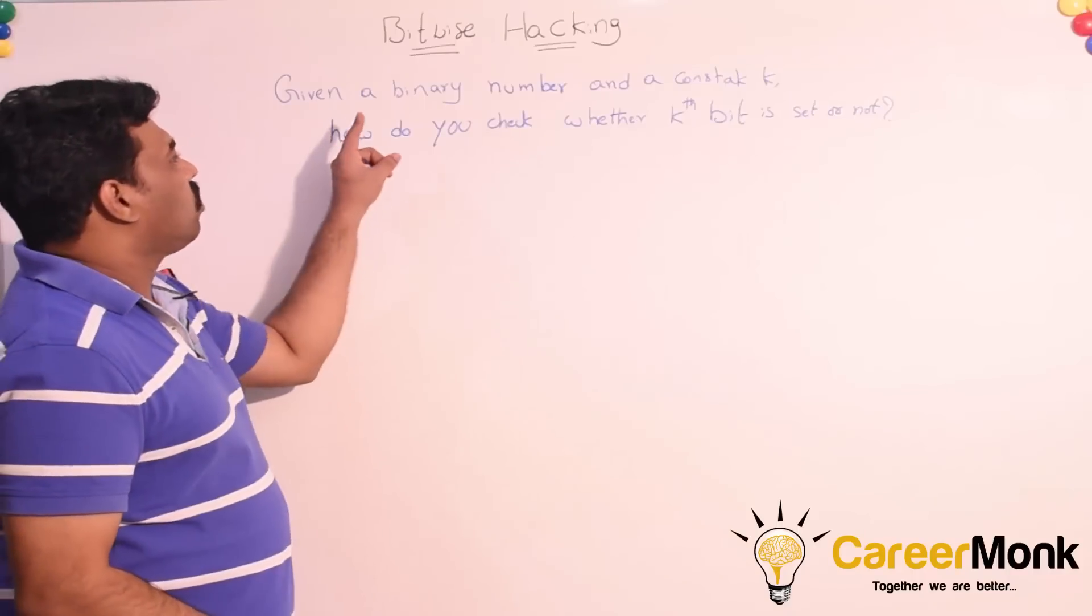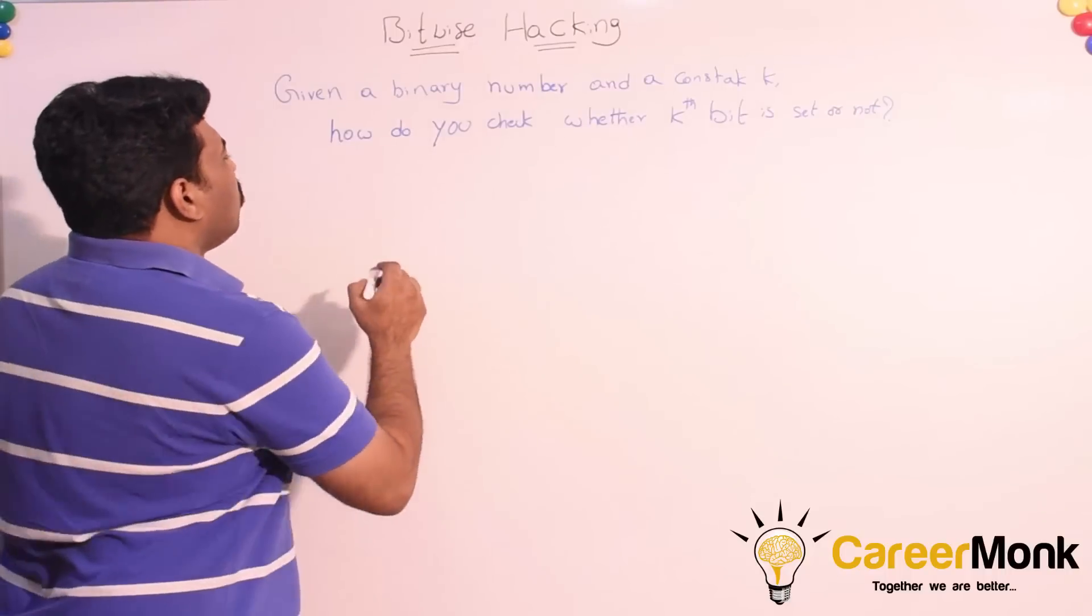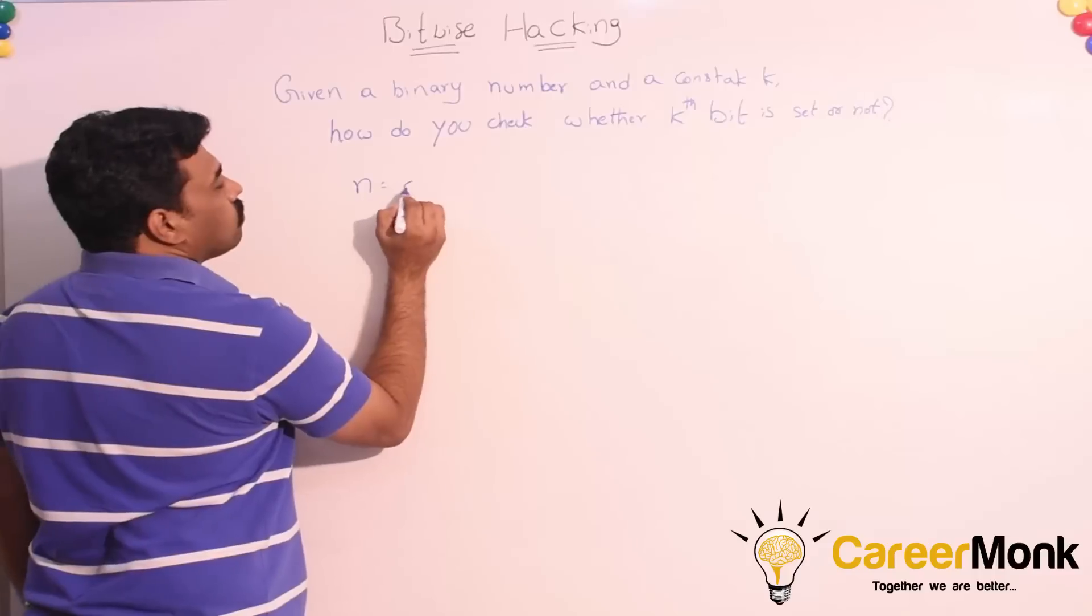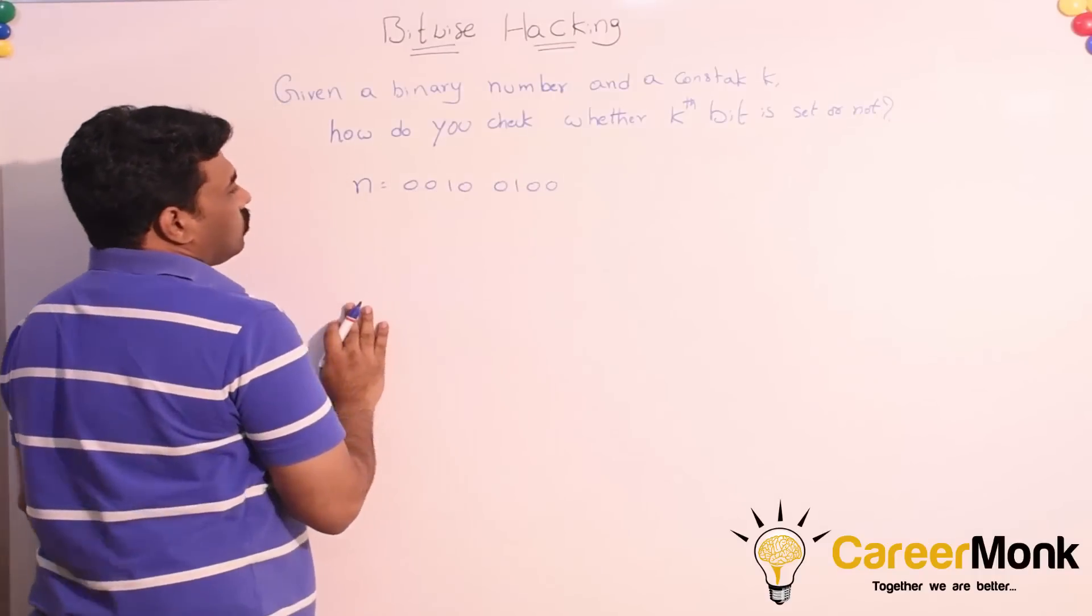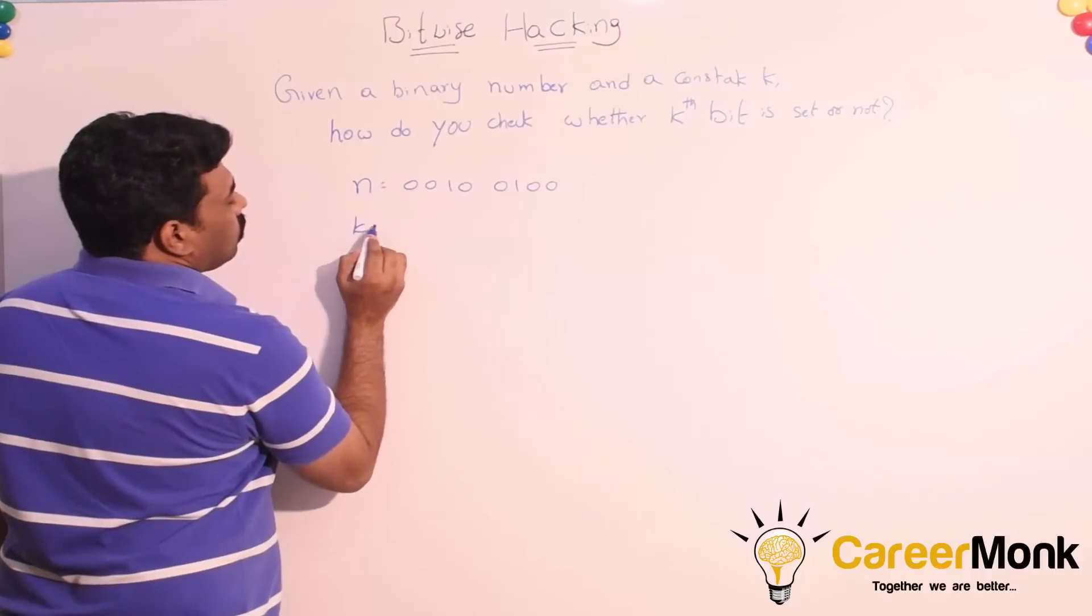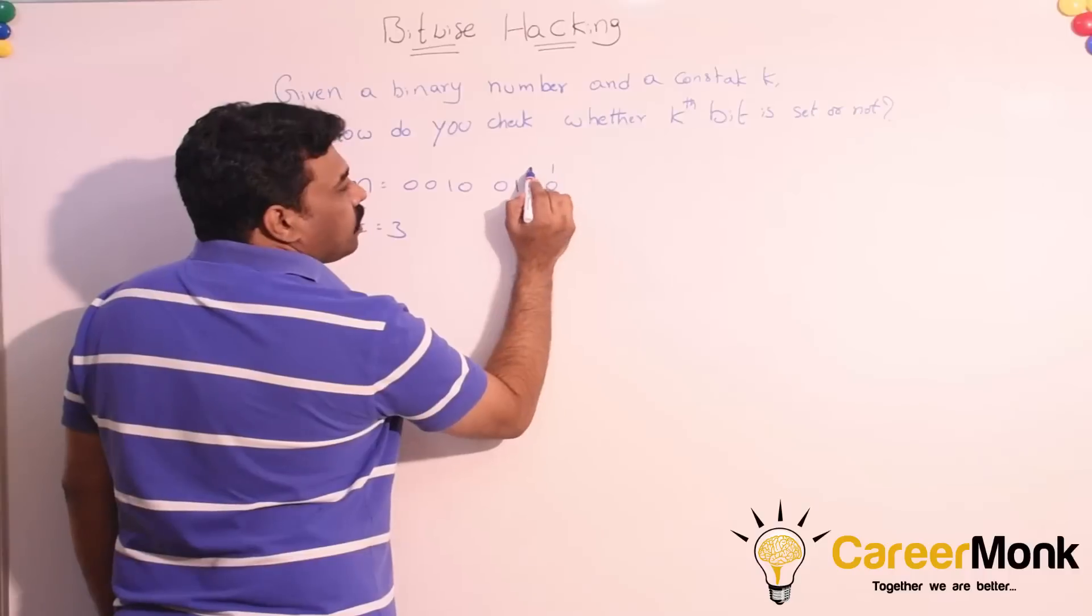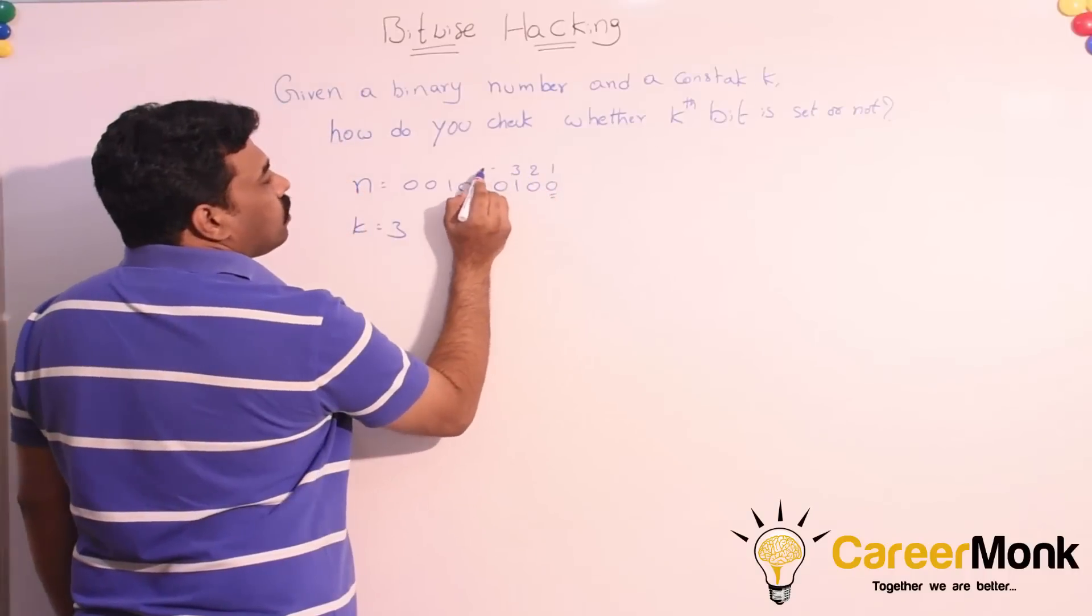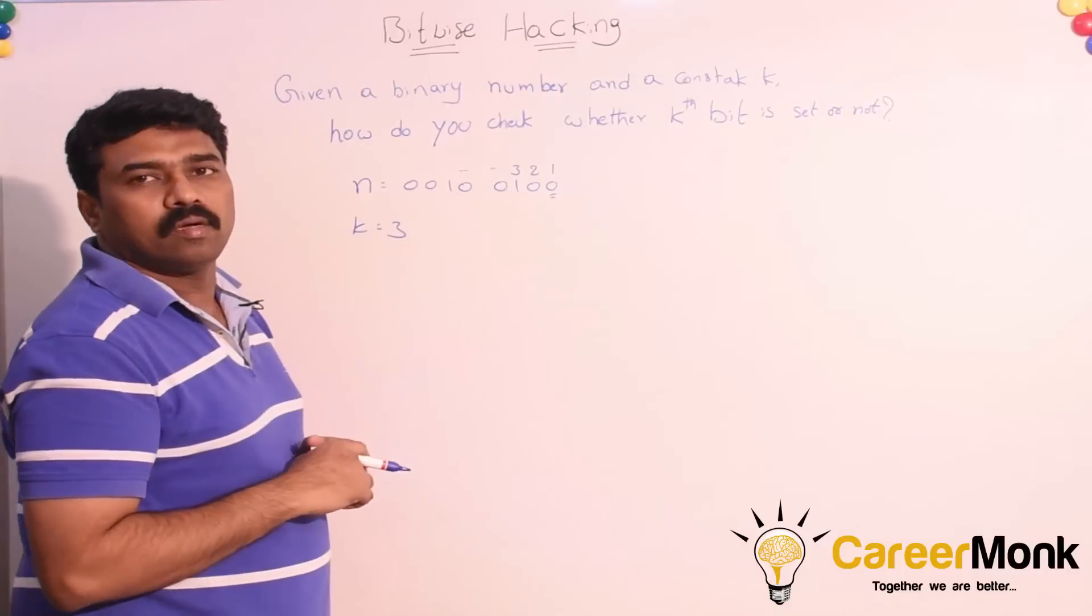Given a binary number along with a constant k, how do you check whether the kth bit is set or not? For example, since this is the least significant bit, first bit, second bit, third bit. For this number, how do you check whether the third bit is set or not?